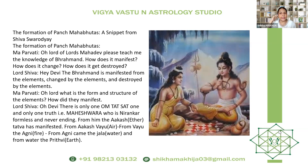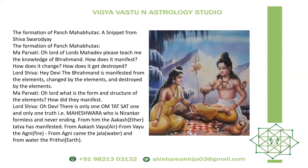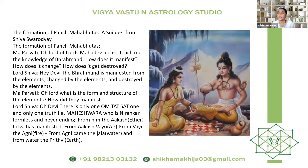The first element that came into existence was ether, that is akash tattwa. From akash came vayu. From vayu came fire. From vayu came jala. And from jala came earth. We all have these five elements within us. These five elements are the base of our chakras — they control each and everything. Each chakra is based on one element. Like the muladhara chakra, it is the root chakra and it is the earth tattwa.